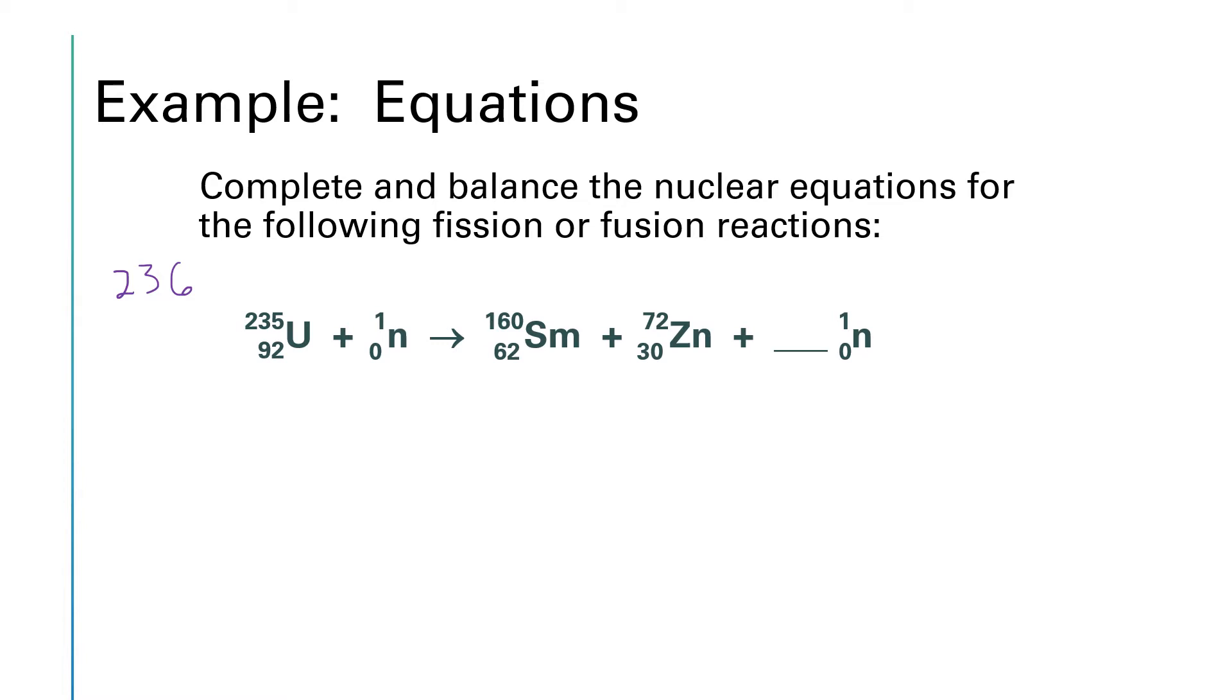Over on the right hand side we have 160 plus 72, which gives us 232. That's for the samarium plus the zinc and it needs to equal 236, so we need 4 more. So we're going to put a coefficient of 4 in front of the neutrons. 4 times 1 gives us 4, so if we add that 4 to the 232 we get that total of 236.